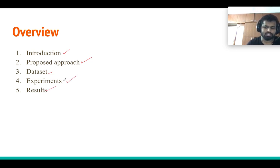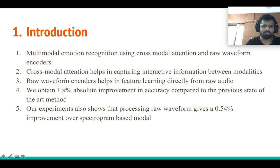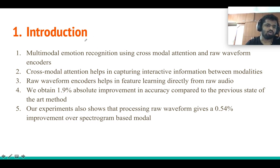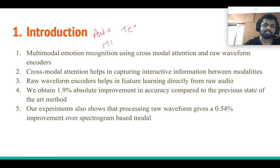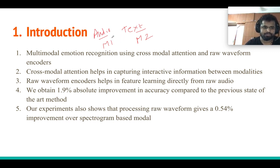As the paper itself says, we are working with multimodal emotion recognition. The idea is to use two or three different modalities to predict the emotion class of an audio sample. In our case, we use audio as one modality (M1) and text as another modality, combining them in a neural network setting to predict the class label of a particular audio.